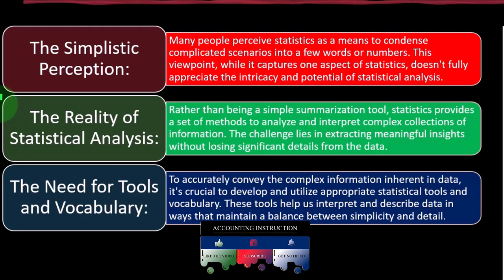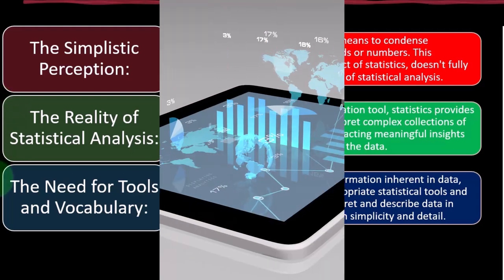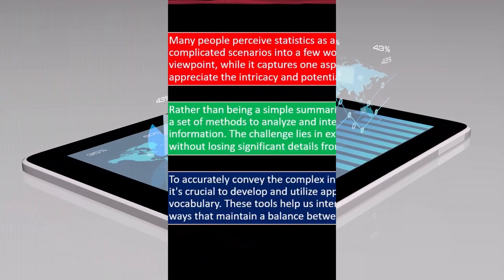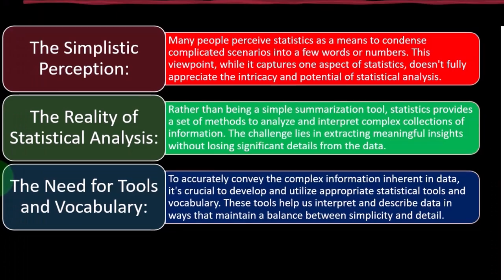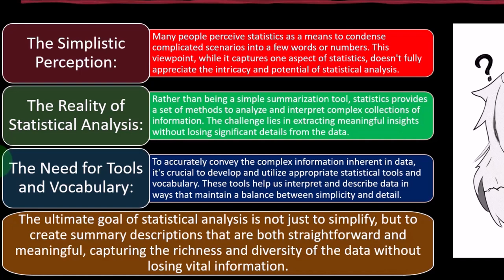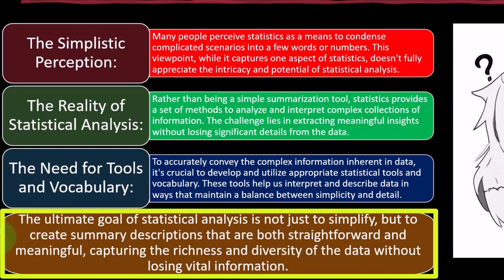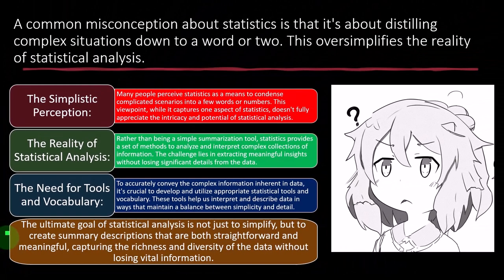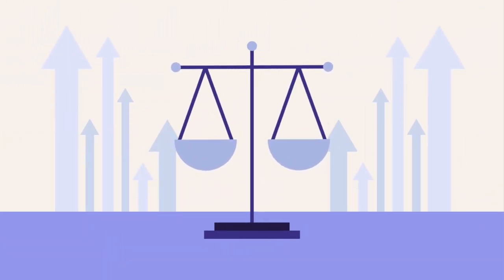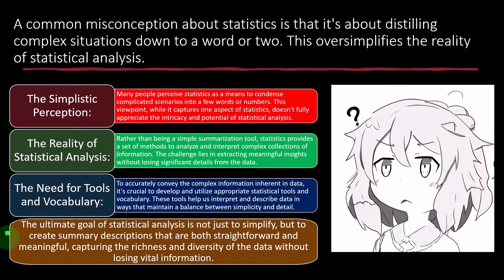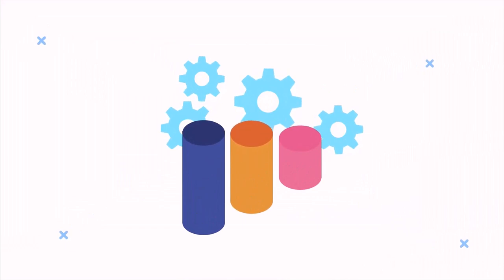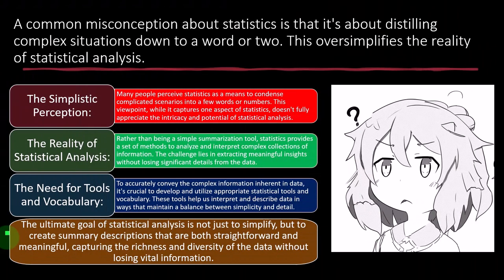To accurately convey the complex information inherent in data, it's crucial to develop and utilize appropriate statistical tools and vocabulary. These tools help us interpret and describe data in ways that maintain a balance between simplicity and detail. The ultimate goal of statistical analysis is not just to simplify, but to create summary descriptions that are both straightforward and meaningful, capturing the richness and diversity of the data without losing vital information. It's a balancing act — we want to simplify to find meaning, but not oversimplify to the point where we draw incorrect conclusions.